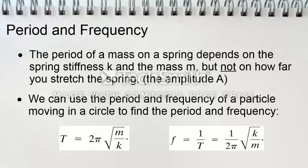Period and frequency: the period of the mass on a spring depends on the spring stiffness k and the mass m, but not on how far you stretch the spring. We can use the period and frequency of a particle moving in a circle to find the period and frequency. The period T can be found by multiplying 2π times the square root of the mass over the spring stiffness. And the frequency can be found by multiplying 1 over 2π by the square root of the spring stiffness over the mass.